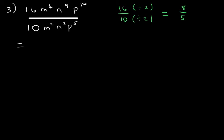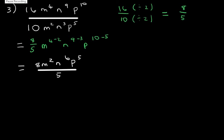So let's simplify our exponents. Here you can see that we group the m exponents together, 4 minus 2, and we group the n exponents together, 9 minus 3, and we group our p exponents together, 10 minus 5. What does that give us? That gives us 8m squared n to the power 6 p to the power 5 over 5.